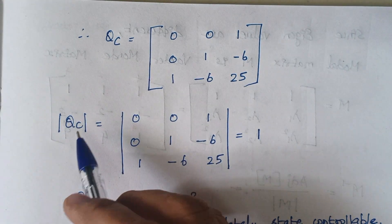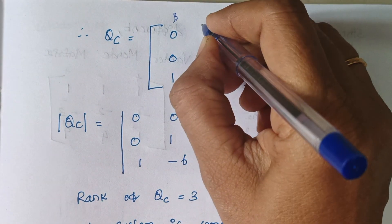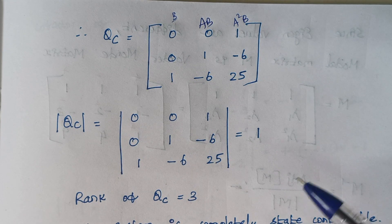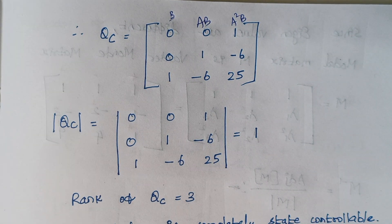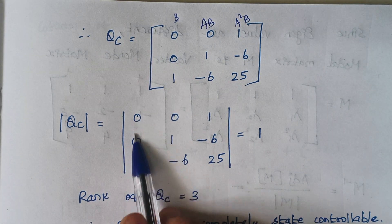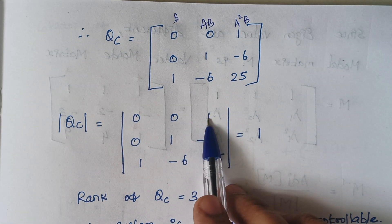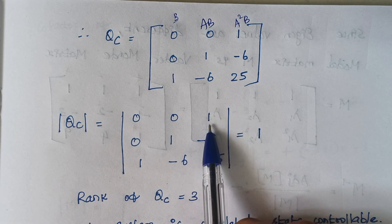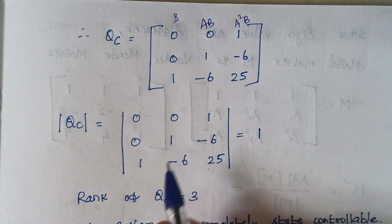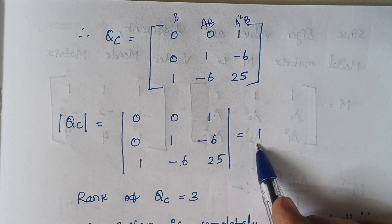Substituting the values, we arrive at the matrix QC, composed of B, AB, and A²B. The next step is to calculate the determinant. The first element is 0, the second is also 0, and the third is 1. For that 1, we leave its row and column: 0×(−6) = 0 and 1×1 = 1, giving an answer of 1.